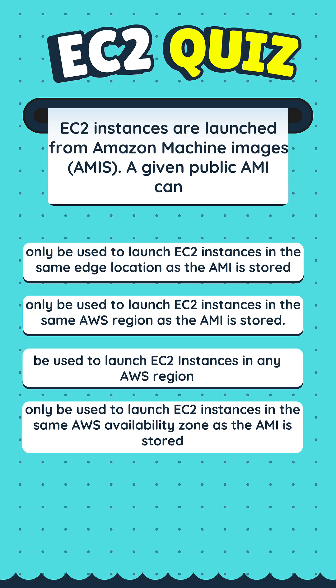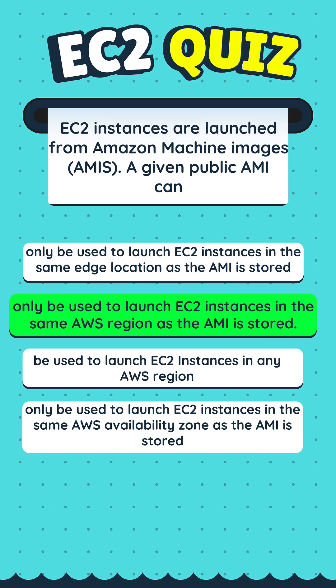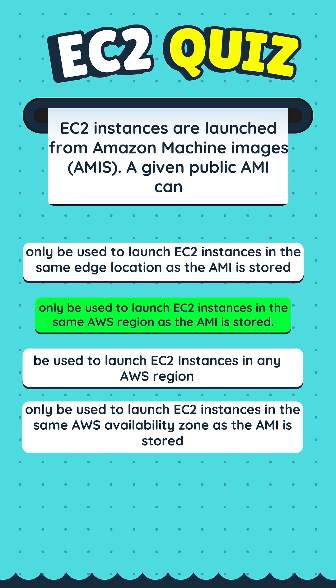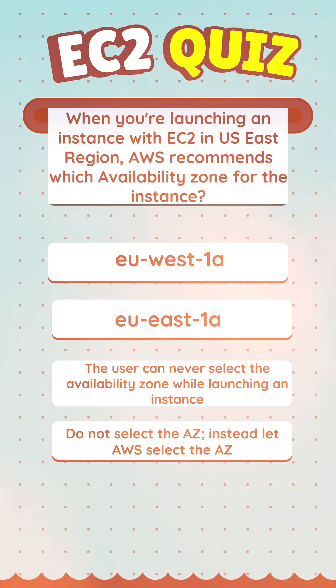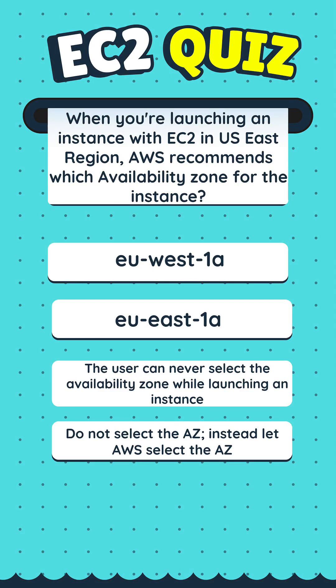A given public AMI can... Times up. The correct answer is B. When you're launching an instance with EC2 in the US East Region, AWS recommends which availability zone for the instance?